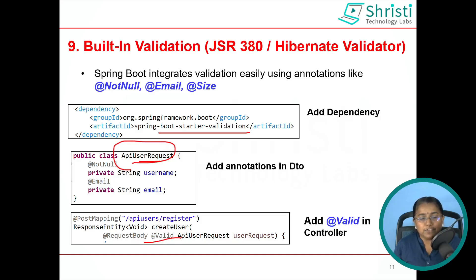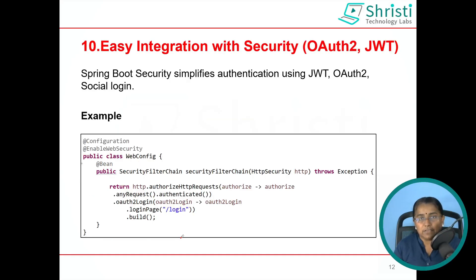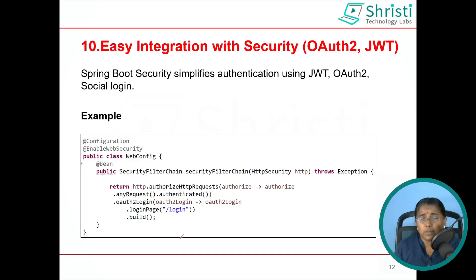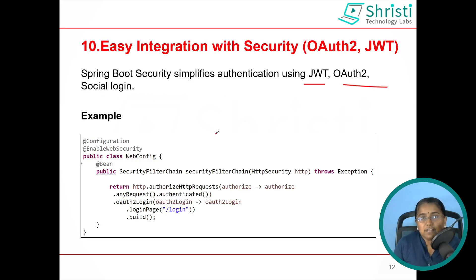The next feature is easy integration with security. As mentioned earlier, the moment you add Spring Security as a dependency to your Spring Boot application, the corresponding beans needed are configured automatically. Additionally, if you want to work with third-party libraries like OAuth2 or JWT, that support is also provided by Spring Boot for authenticating and authorizing your application. Spring Boot Security simplifies authentication using JWT, OAuth2, and social login.